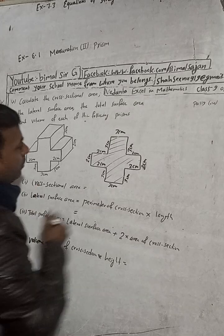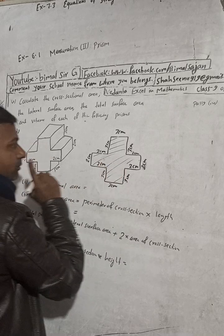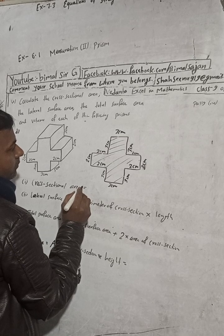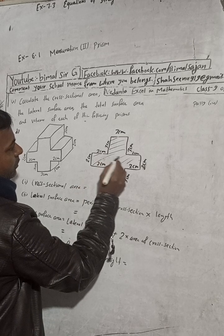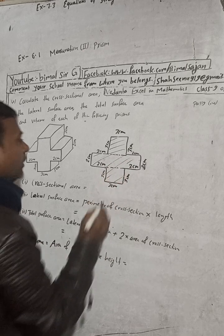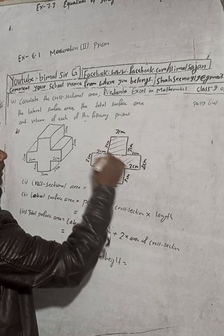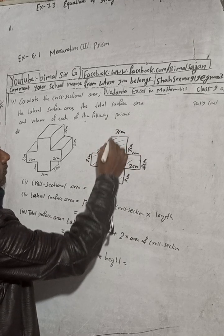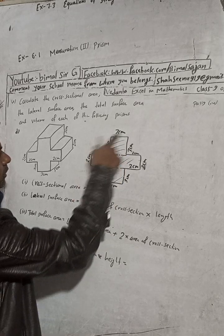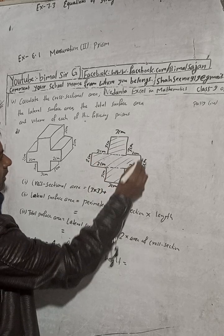To find the cross-sectional area, I will divide the shape. I join here — this and this. So this portion is now 3 cm by 3 cm; this is a square. The square area is 3 × 3 (L × B), which is 9. Plus, there is now this rectangle.